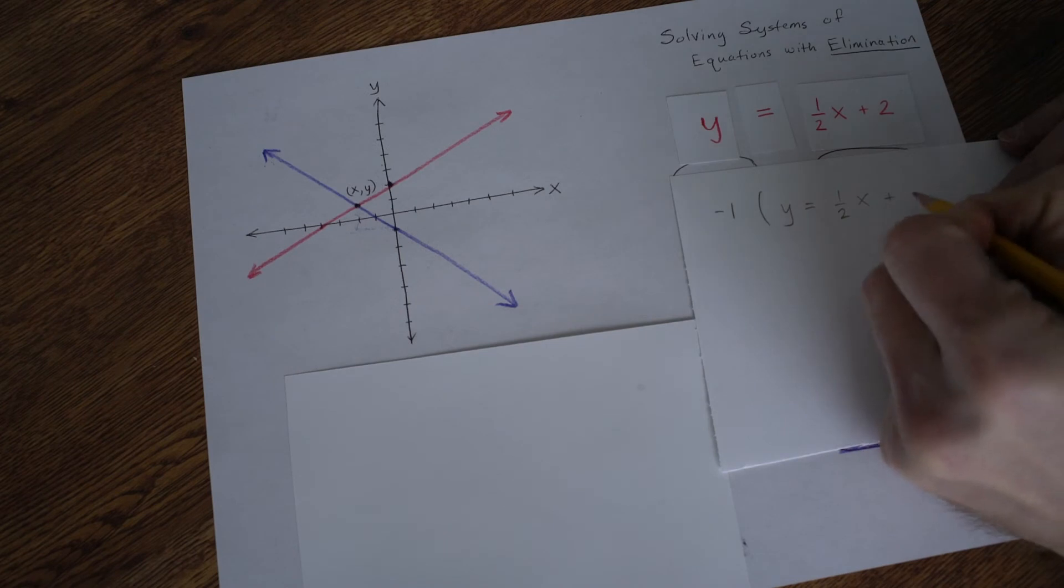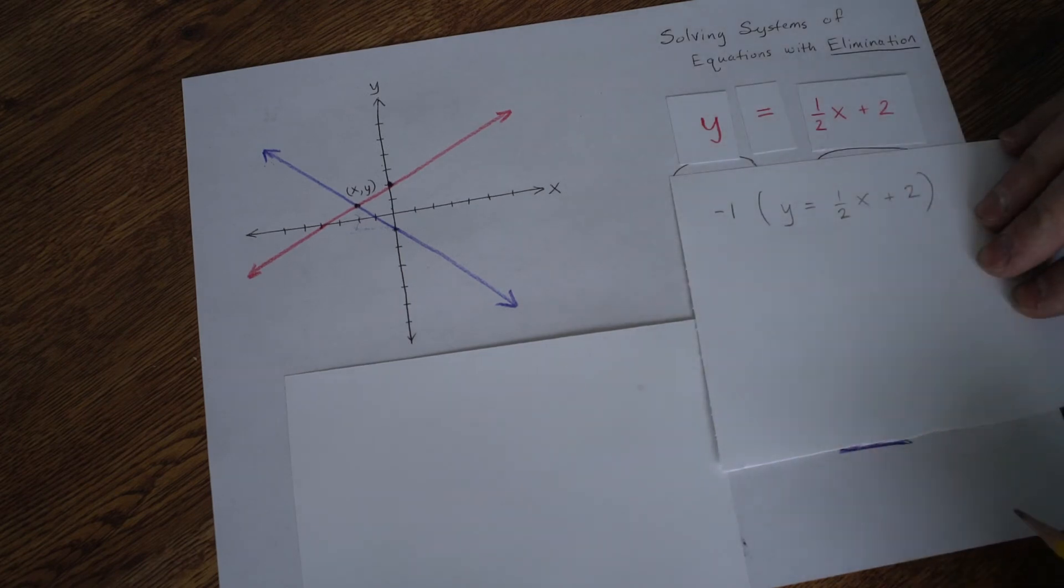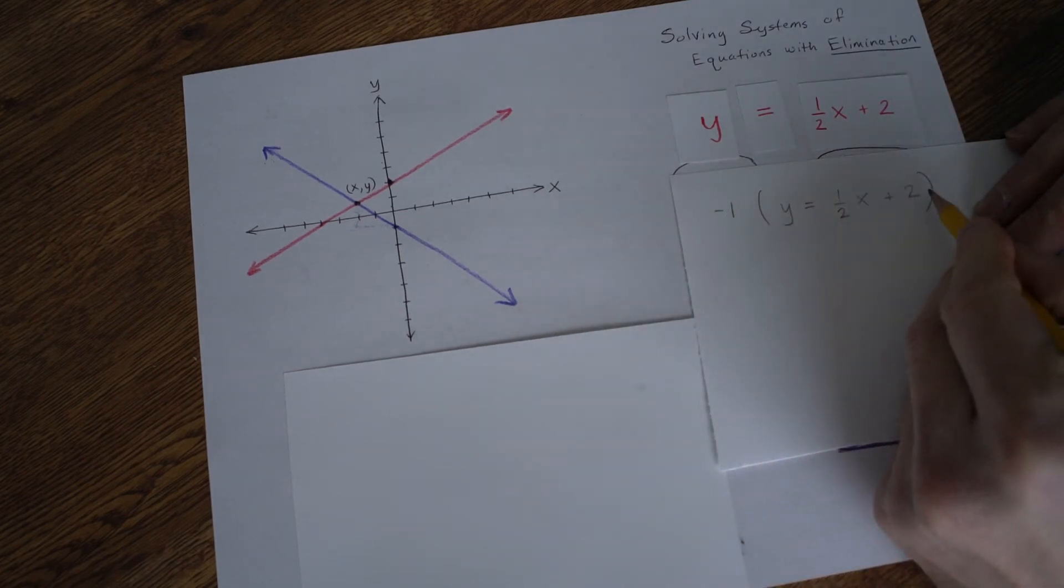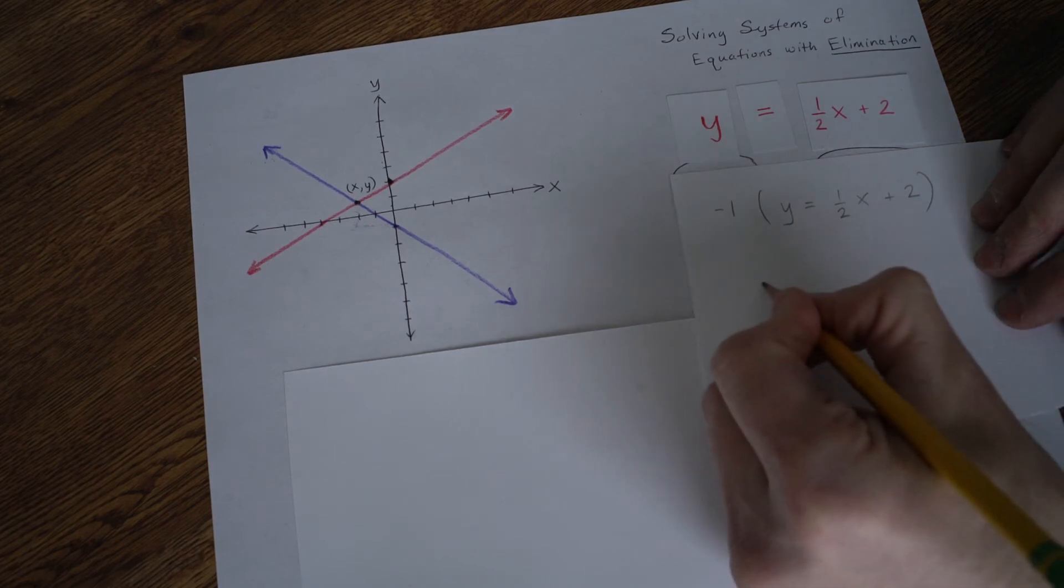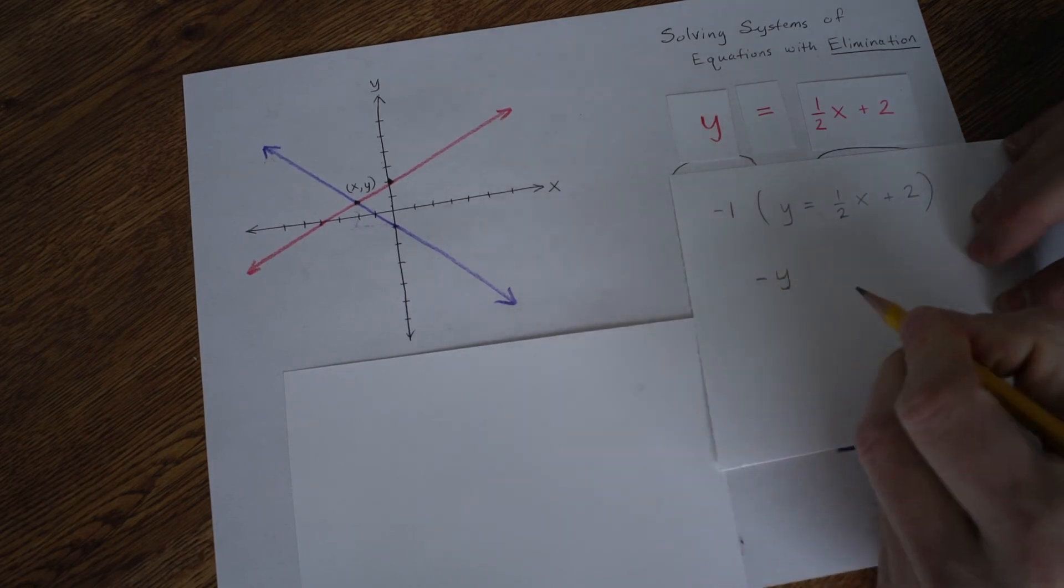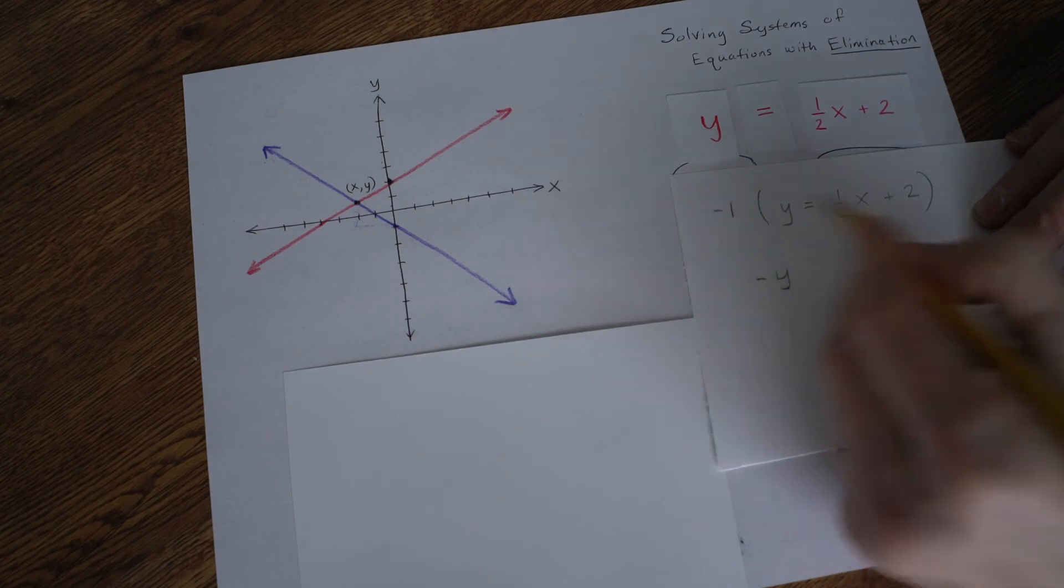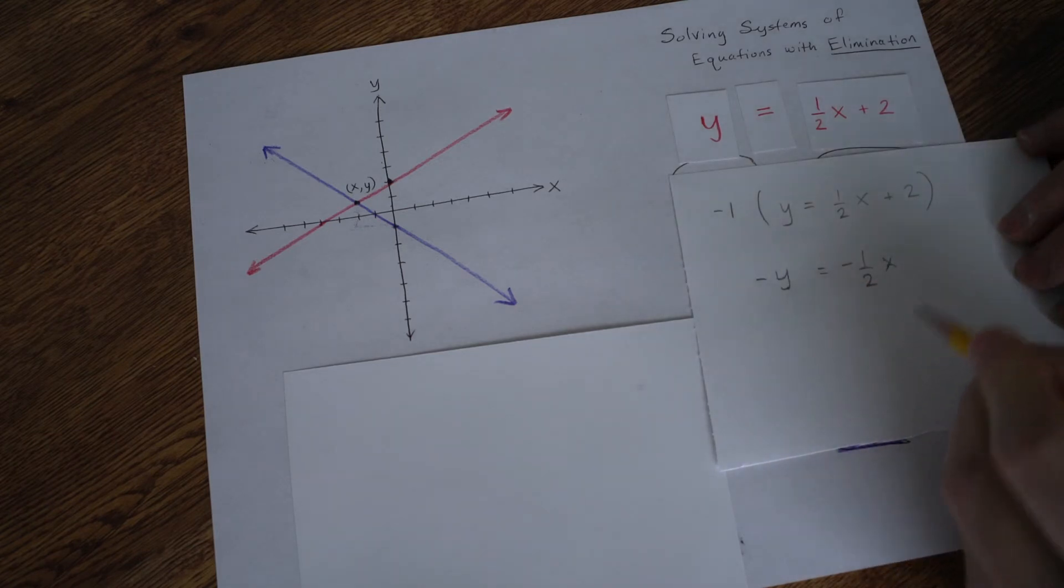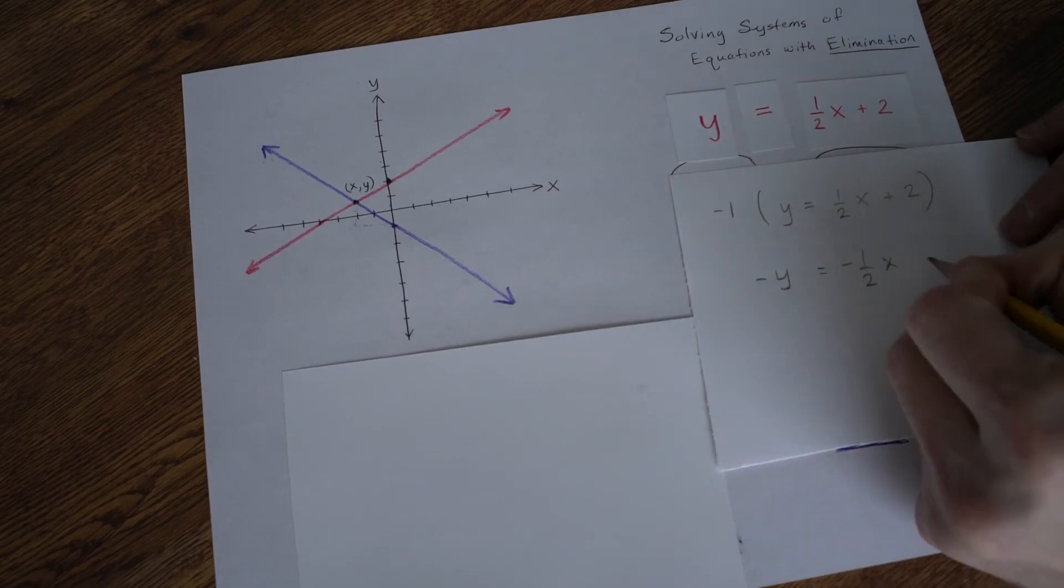So I'm going to multiply by negative 1. Negative 1 times this red line. Now what happens when you multiply by negative 1?